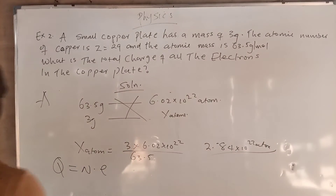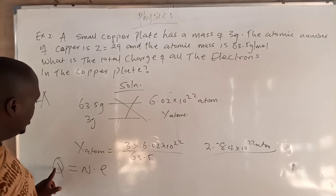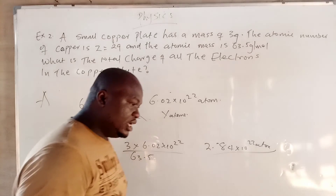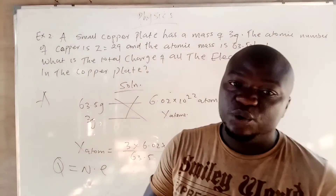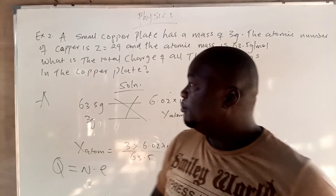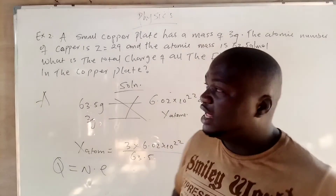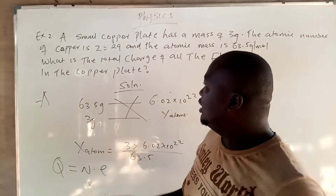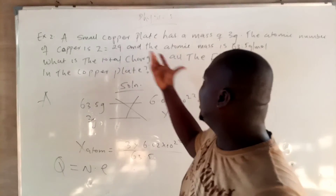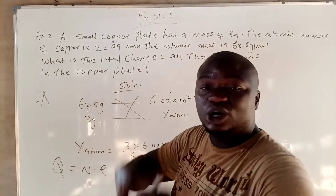Now that we have the number of atoms, we put it into the formula to get the total net charge. Remember, an atom has the same number of electrons and protons. In my video on isotopes, we said whenever you have an atom, the number of protons and electrons are the same. Since the atomic number of copper is 29, the number of electrons in this atom is also 29.